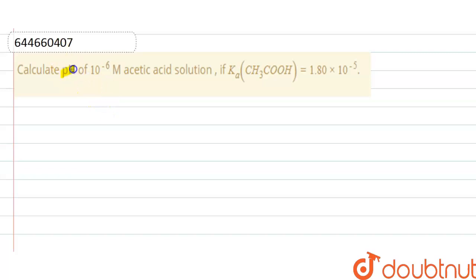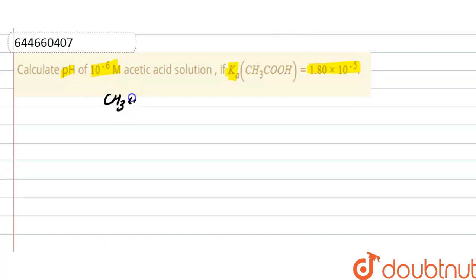Calculate the pH of 10 raised to the power minus 6 molar acetic acid solution, if the acid dissociation constant is 1.8 into 10 raised to the power minus 5. First of all, acetic acid dissociates as acetate ion and H⁺ ion.